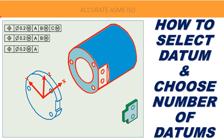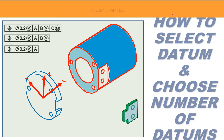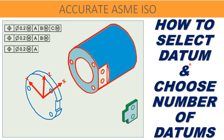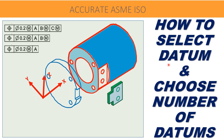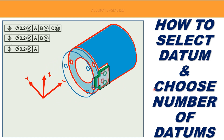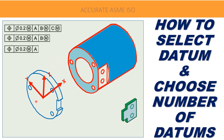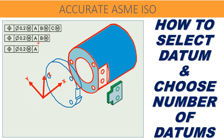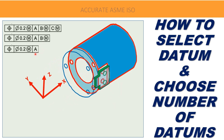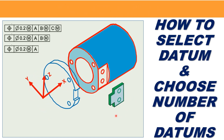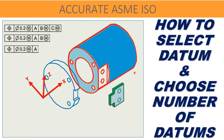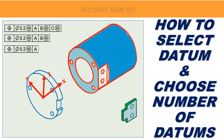Hello friends, welcome to our YouTube learning channel Accurate ASME ISO. You will find many information regarding datum types, degrees of freedom, and more on many resources. But let us go beyond these basic things and understand the criteria while selecting the datum features, datums, and number of datums, which plays a vital role in GD&T. With real assembly examples, we will learn all these in this video.